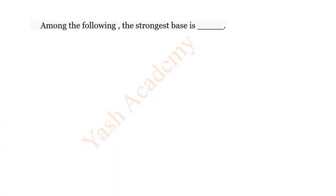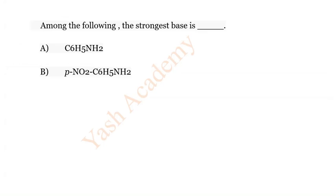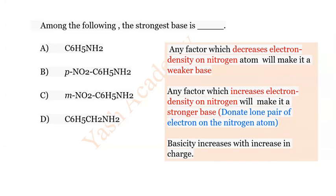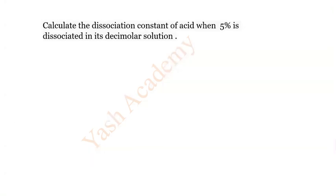Question 13: Among the following, the strongest base is? Options: A) Aniline (C₆H₅NH₂), B) Para-nitroaniline, C) Meta-nitroaniline, D) Benzylamine. The correct answer is D) Benzylamine.